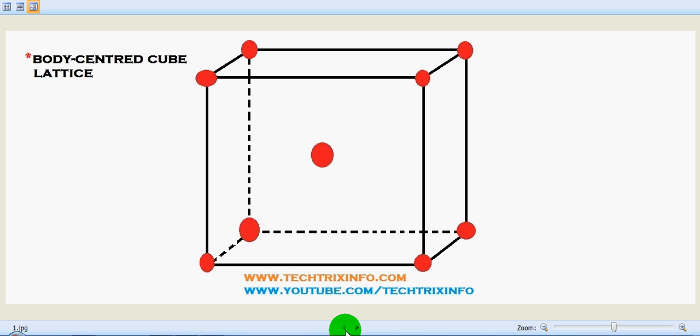So here we have a body centered cube lattice. There are atoms at each corner of the cube. You can see each corner of the cube we have arrangement of atoms. And one in the center of the body of the cube. So this atom is placed at the center of this cube.